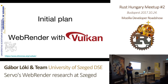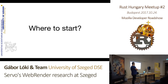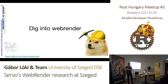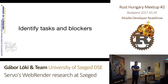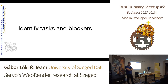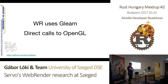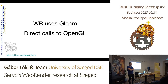First things first — where we started. The usual: clone WebRender and dig into the source code. We didn't have an awesome talk about WebRender back then, so we had to figure out everything ourselves. The first thing we did was identify the main tasks and possible blockers. We found that WebRender uses a crate called Gleam, which is just a wrapper around OpenGL — basically calling pure OpenGL with no third-party libraries required. That was the good part.